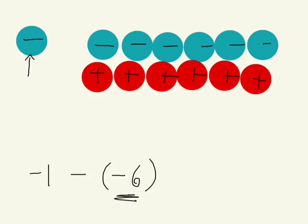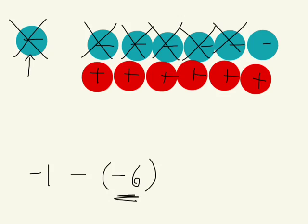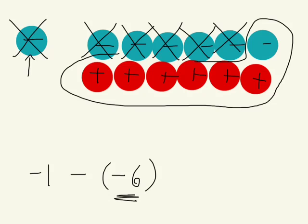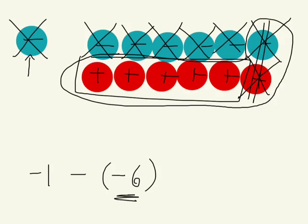Good. Now can we take away six negatives? So let's take away, let's start from here. One, two, three, four, five, six. Okay. Now we're left with six positives and one negative. Do any of these cancel out? One. Our zero principle, these two cancel out, right? What are we left with? Five. We're left with five positives.